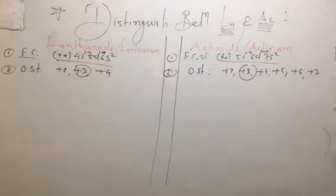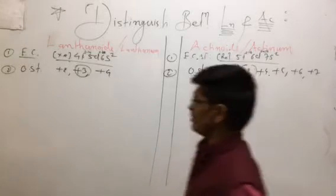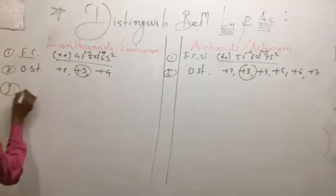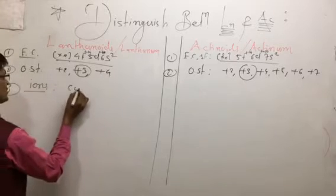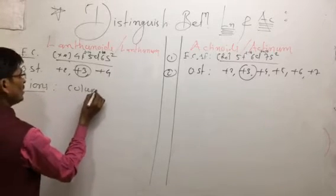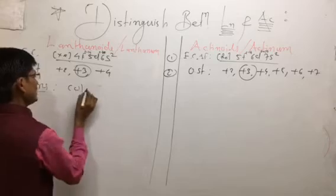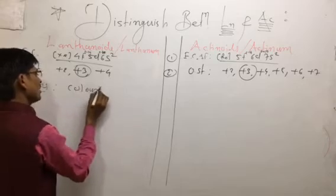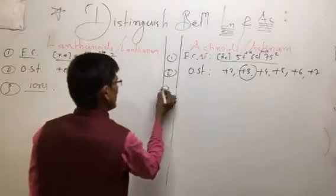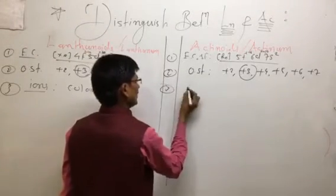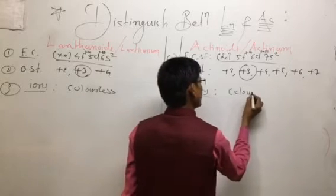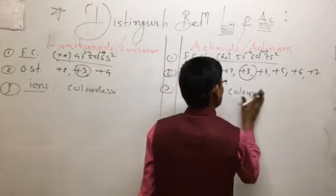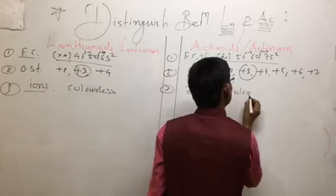Next point — third point: ions. For the lanthanoid series, the ions are colorless. For the actinoid series, the ions show color.